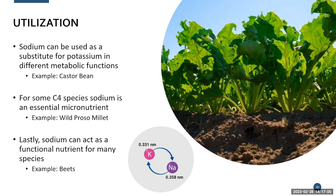An example of a plant that does this is castor bean. Once it has mature roots, it takes the sodium and chloride, puts them in the vacuole so they can't harm other organelles, then uses that stored sodium and chloride to make the plant cell more negative — allowing it to pull even more water in and out-compete the soil. This is how plants can utilize sodium instead of potassium.